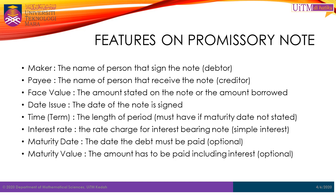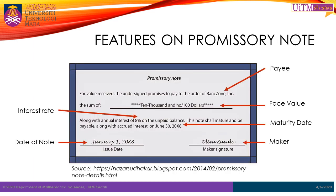Remember that we are using simple interest with banker's rule in this chapter. Number 7, maturity date — it is the date the debt must be paid. The maturity date is optional if the maker has already mentioned the term. And lastly, Number 8, maturity value — which is the amount to be paid including interest, if any. This is optional and can be calculated using the simple amount formula: S equals P multiplied by (1 plus R times T). The pictures shown illustrate the important features of promissory notes.